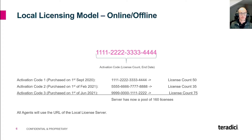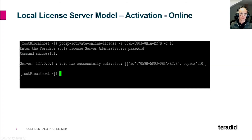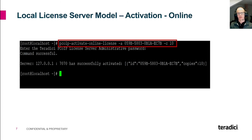If you are purchasing new licenses, you have to activate them again on the license server. The pool of licenses will then increase according to the number of licenses you purchased. You will activate the license on your license server via the CLI command shown on the slide. Dash A stands for your activation code and dash C stands for the license count that you want to activate.